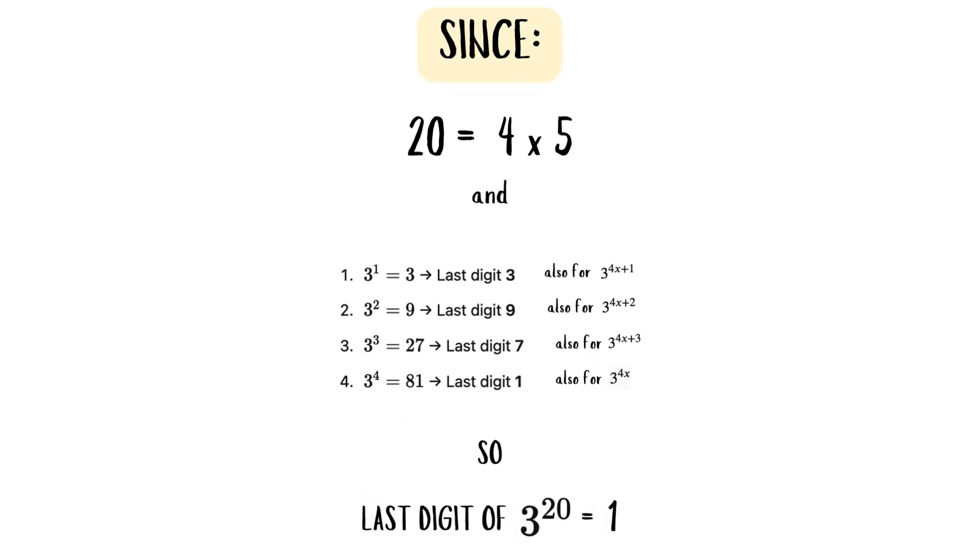Now since 20 is equal to 4 times 5, which is basically also in the form of 4x, the last digit of 3 to the power of 20 is equal to 1.